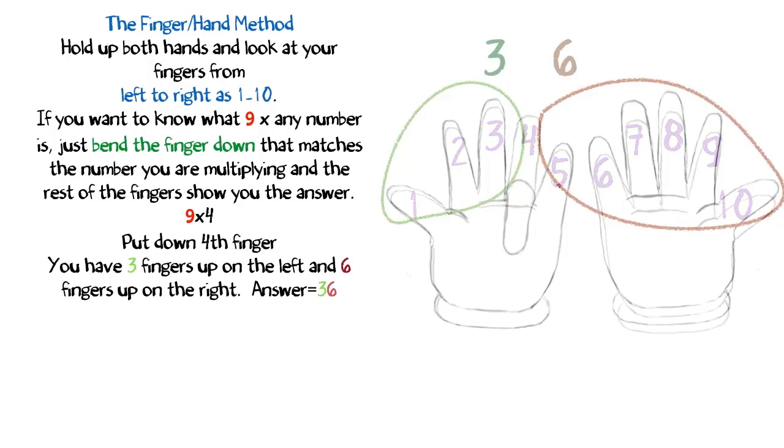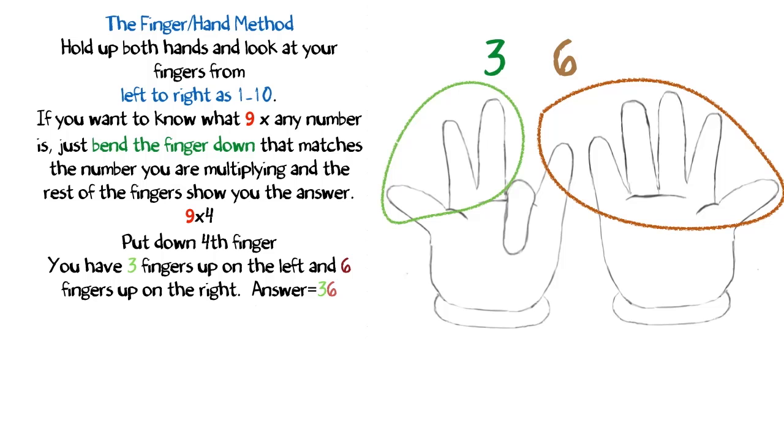For 9 times 4, you would put down the 4th finger. You have 3 fingers up on the left and 6 fingers up on the right. Answer equals 36.